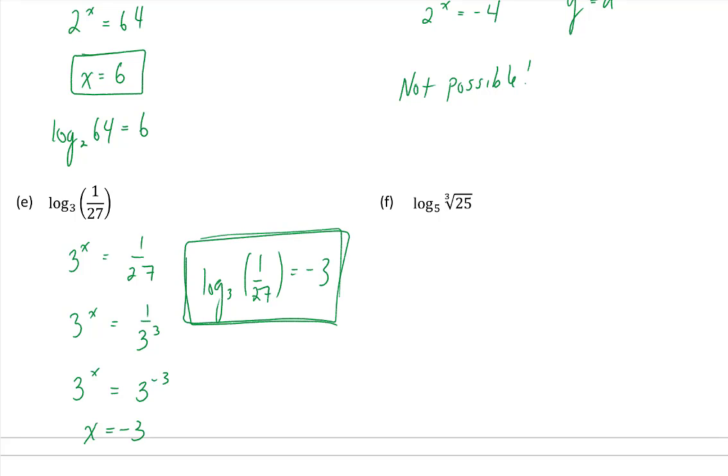Next one, log base 5. So 5 to some exponent should equal the cubed root of 25. Remember the cubed root is the same thing as the exponent of 1 third. 25 is the same thing as 5 squared. Using our exponent rules, we get 5 to the exponent of 2 thirds, which means that x is equal to 2 thirds. This tells us that the logarithm base 5 of the cubed root of 25 is equal to 2 thirds.